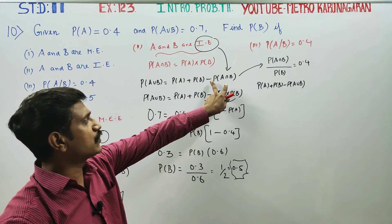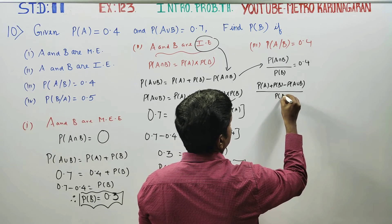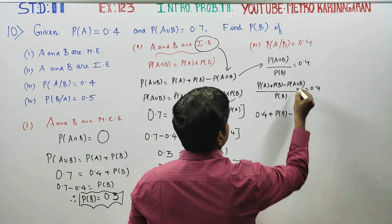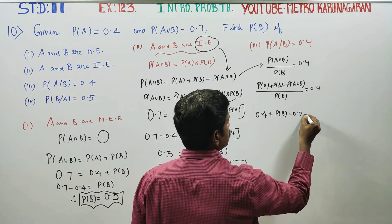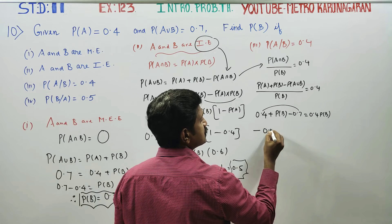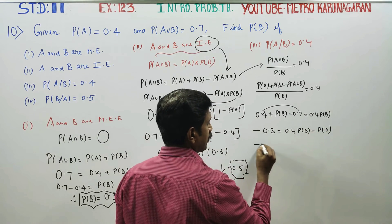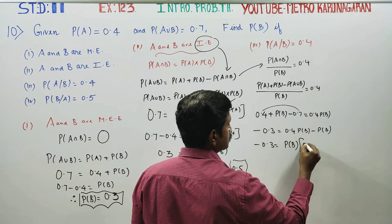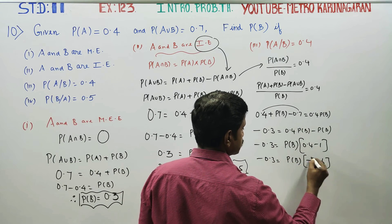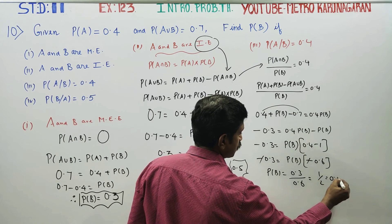Substituting values: P(A) = 0.4, P(A∪B) = 0.7. So P(A∩B) = 0.4 + P(B) − 0.7. Cross-multiplying: 0.7 × 0.4 into P(B) gives minus 0.3 = 0.4 × P(B) − P(B). Taking P(B) as common: −0.3 = P(B) × (0.4 − 1) = P(B) × (−0.6). Therefore P(B) = 0.3 / 0.6 = 0.5. This is the third result.